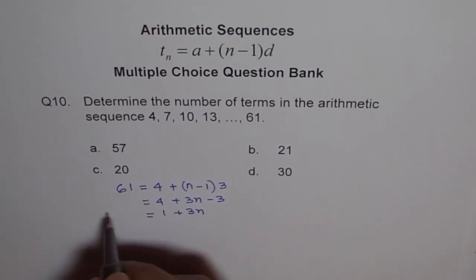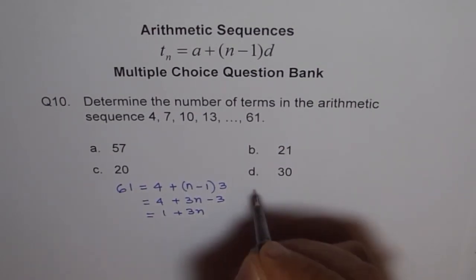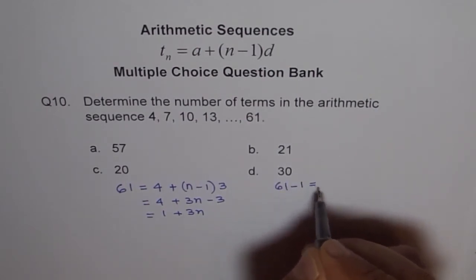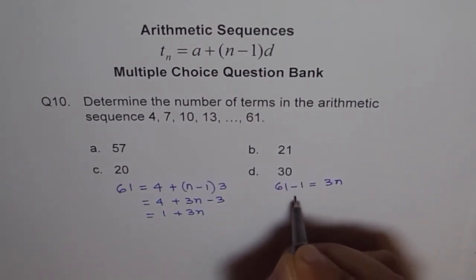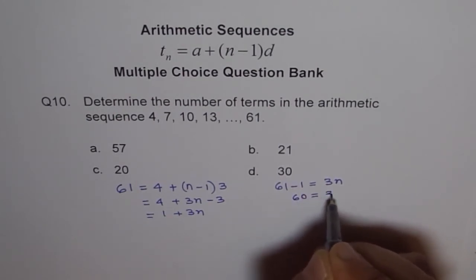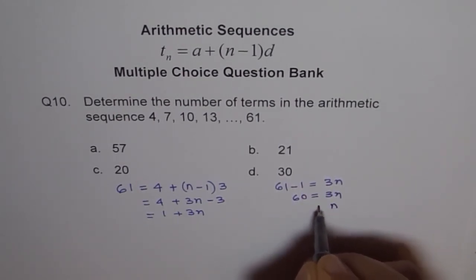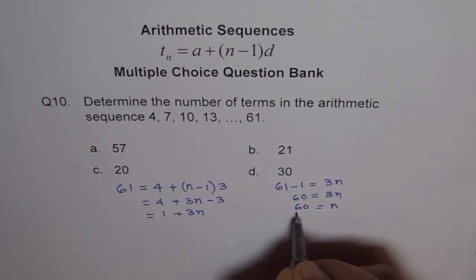Now we can take 1 to this side, so we get 60. Let's solve it. So 61 minus 1 equals 3n. 60 equals 3n. So n equals 60 divided by 3, which is 20.